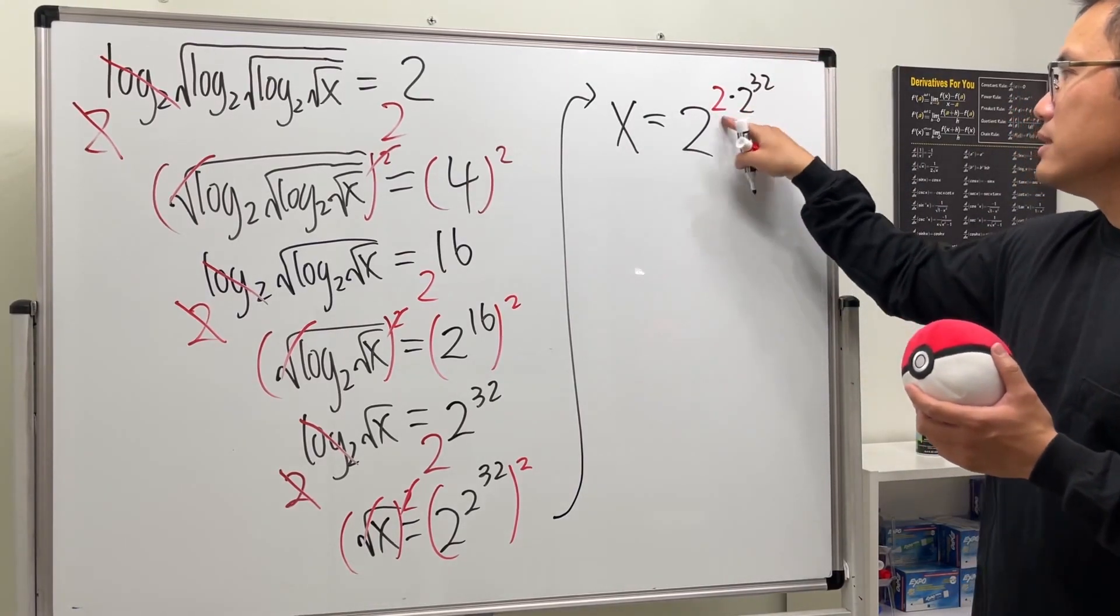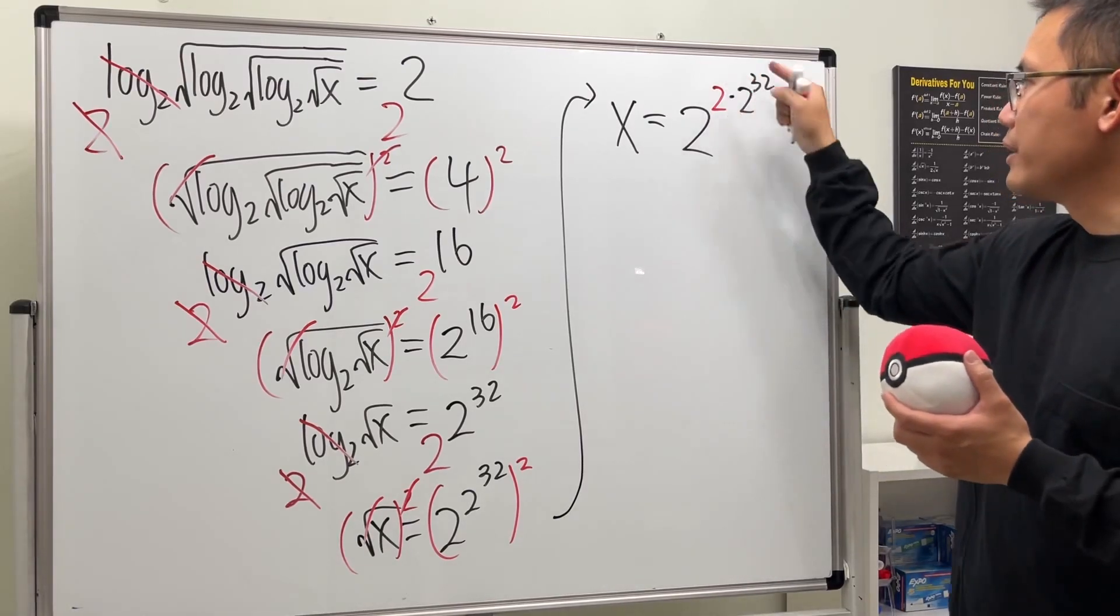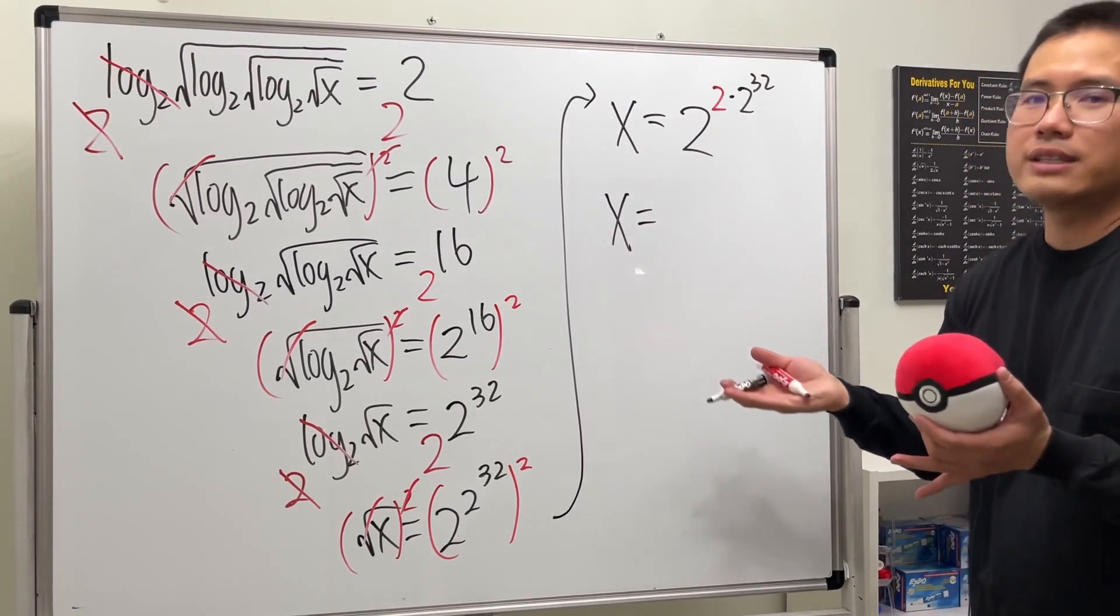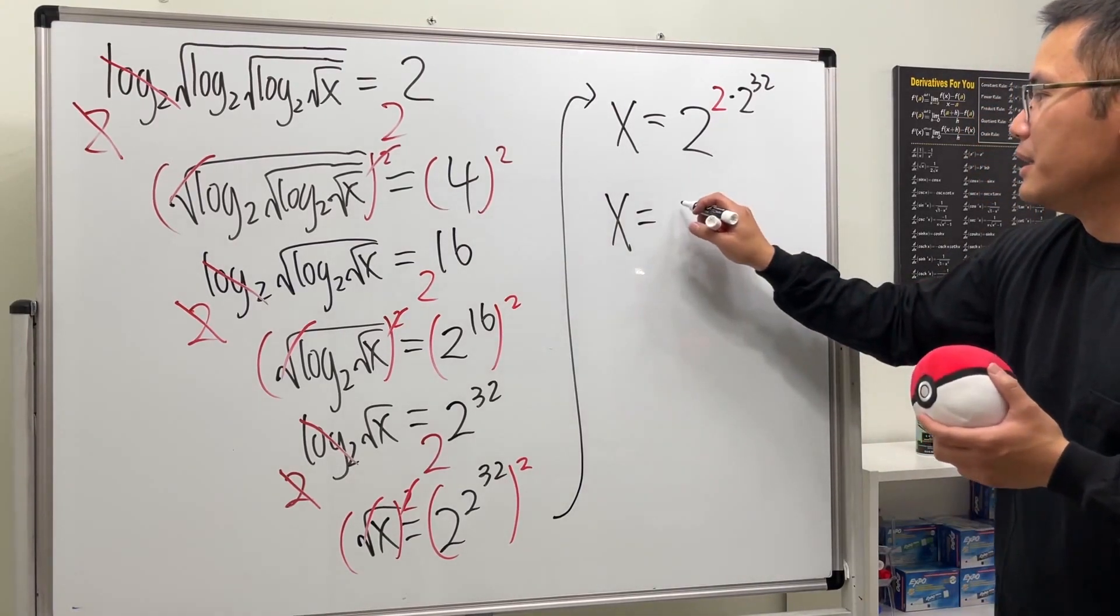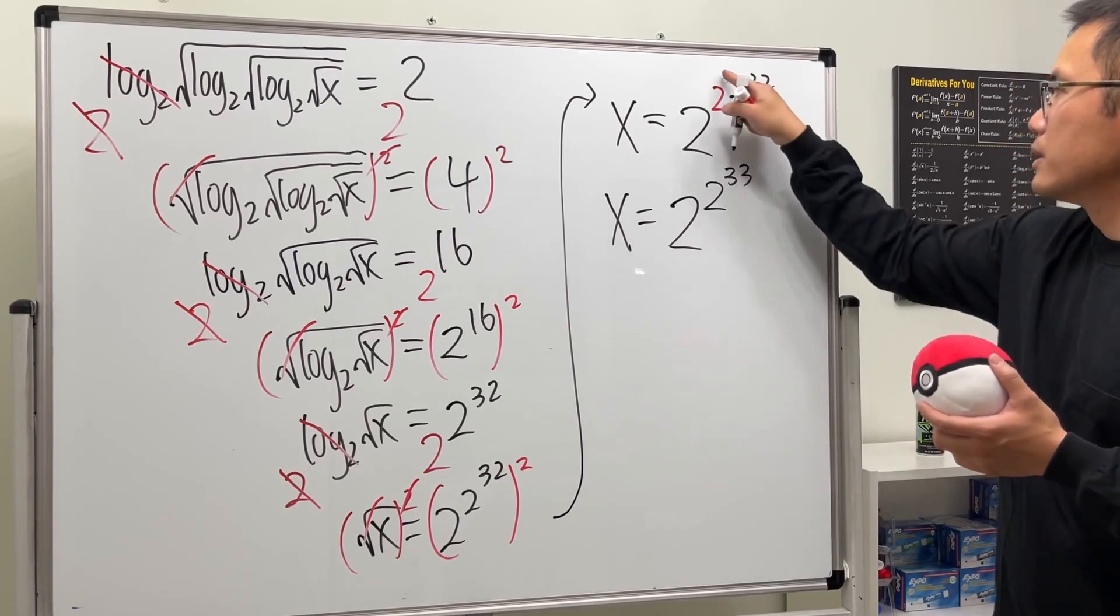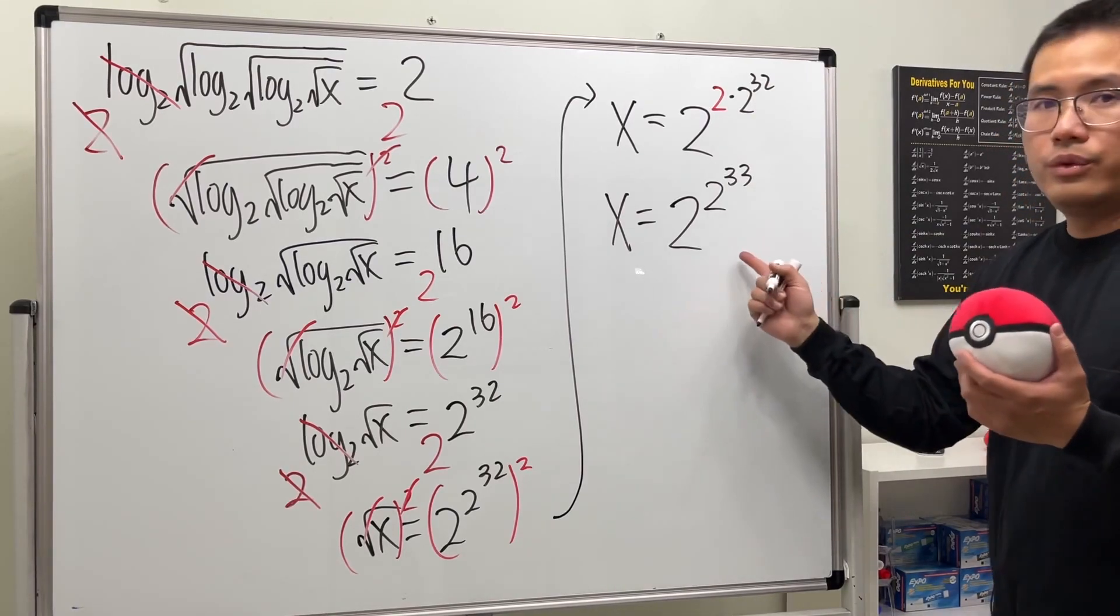But if you focus on this part, this is 2 to the first power times 2 to the 32, so we can just add the exponents right here. So in fact x is, I shouldn't say just equal to, x is really really big: 2 to the 2 to the 33rd power.